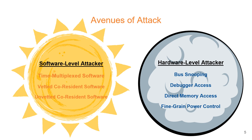The next type of attacker is the hardware-level attacker. A hardware-level attacker can hook probes to the PCB traces to monitor communication between the microcontroller and external memory chips. This precludes defensive approaches relying on external memory for plain text checkpoint storage. Such an attacker has the ability to connect a debugger to the victim's system or leverage direct memory access to access the victim's memory. Additionally, a hardware-level attacker can extract the exact duration of victim application execution by modulating the energy available to the victim device, and leverage their control of the victim's power to induce faults into its execution.